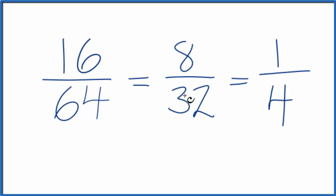You could just divide these by 2 again and get another fraction, and then reduce that to 1 4th as well. Either way, when we simplify the fraction 16 over 64, we get 1 4th. This is the fraction in lowest terms.